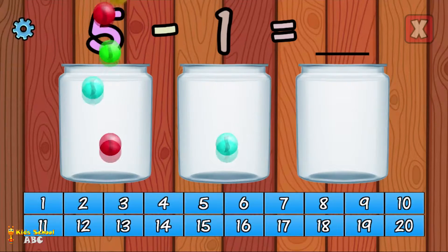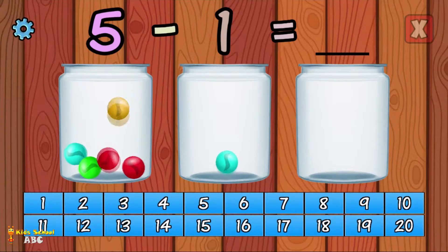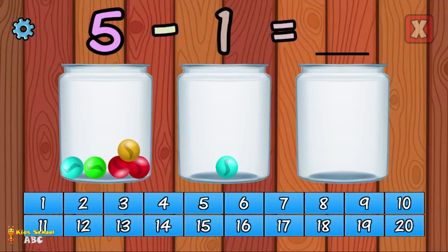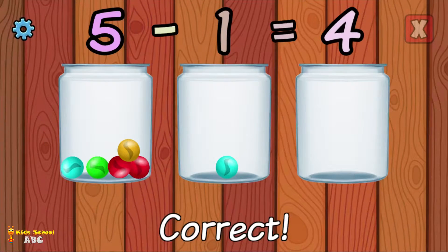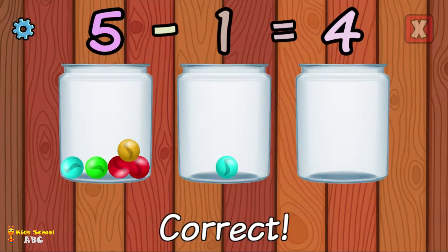What is 5 minus 1? Correct! 5 minus 1 equals 4.